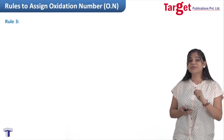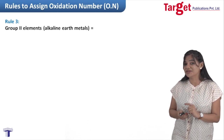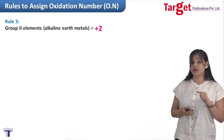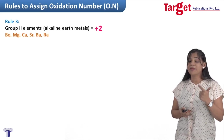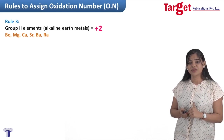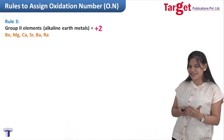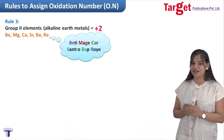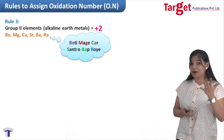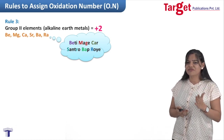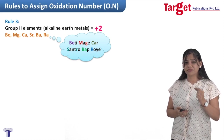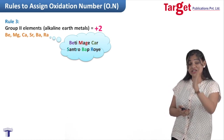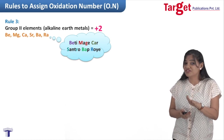Rule 3: alkaline earth metals — that is group 2 elements — are always assigned an oxidation number of +2. The elements of the alkaline earth metals are beryllium, magnesium, calcium, strontium, barium, and radium. A simple mnemonic to remember these is: 'Beti, mage, car, centro, bab, proe.' So group 1 gives +1 oxidation state and group 2 gives +2 oxidation state. The oxidation states of these elements are fixed; we do not need to worry about them.